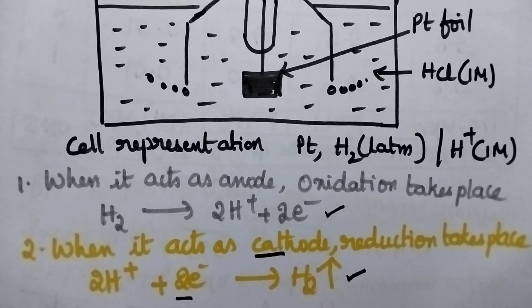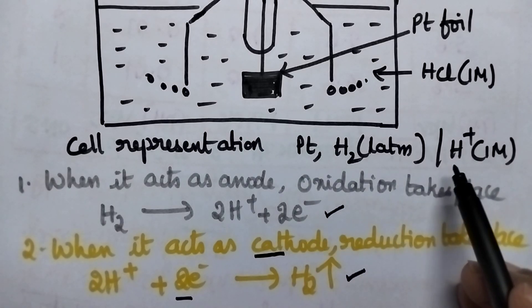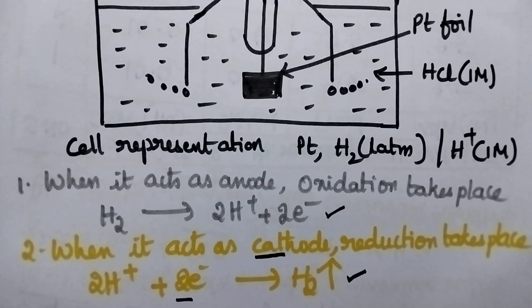This hydrogen electrode can be represented as platinum, hydrogen gas at 1 atmosphere, followed by H+ ions at 1 molar concentration. This is called the cell representation.